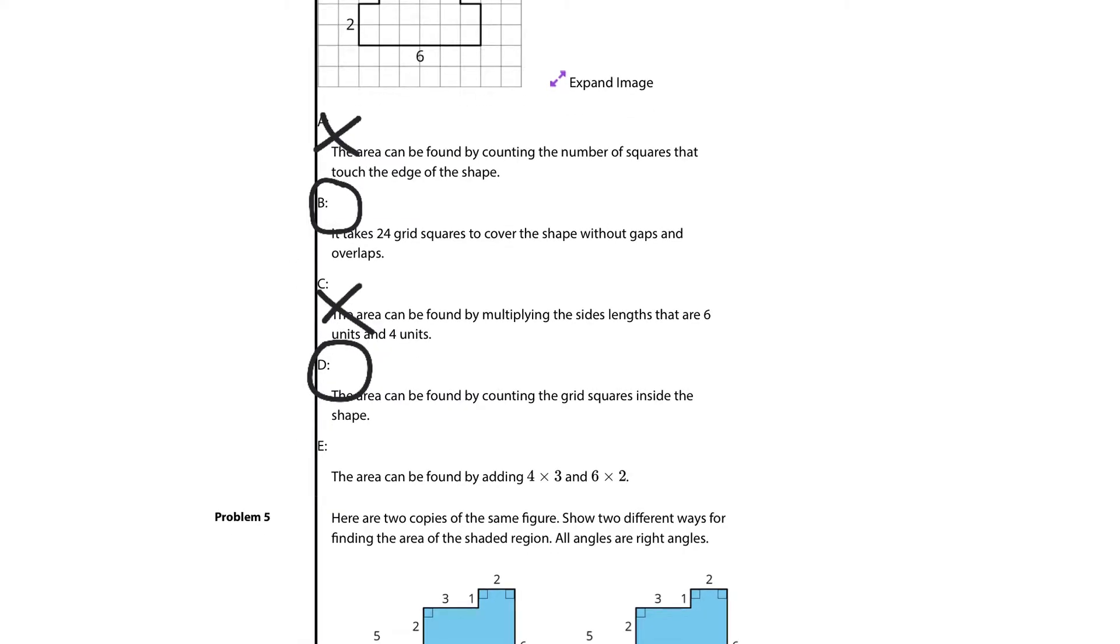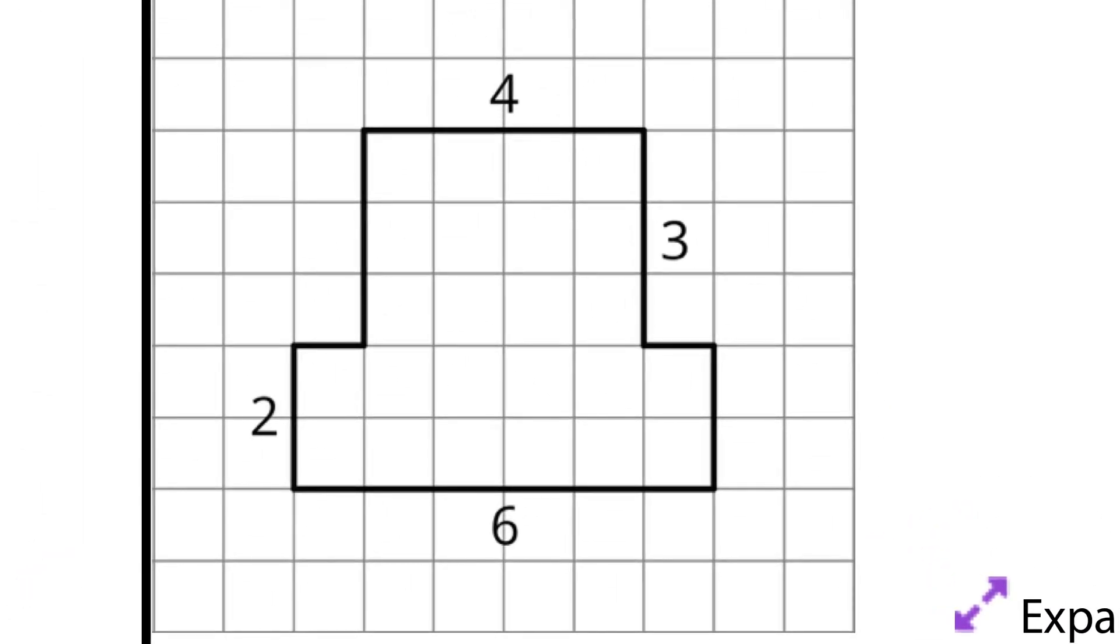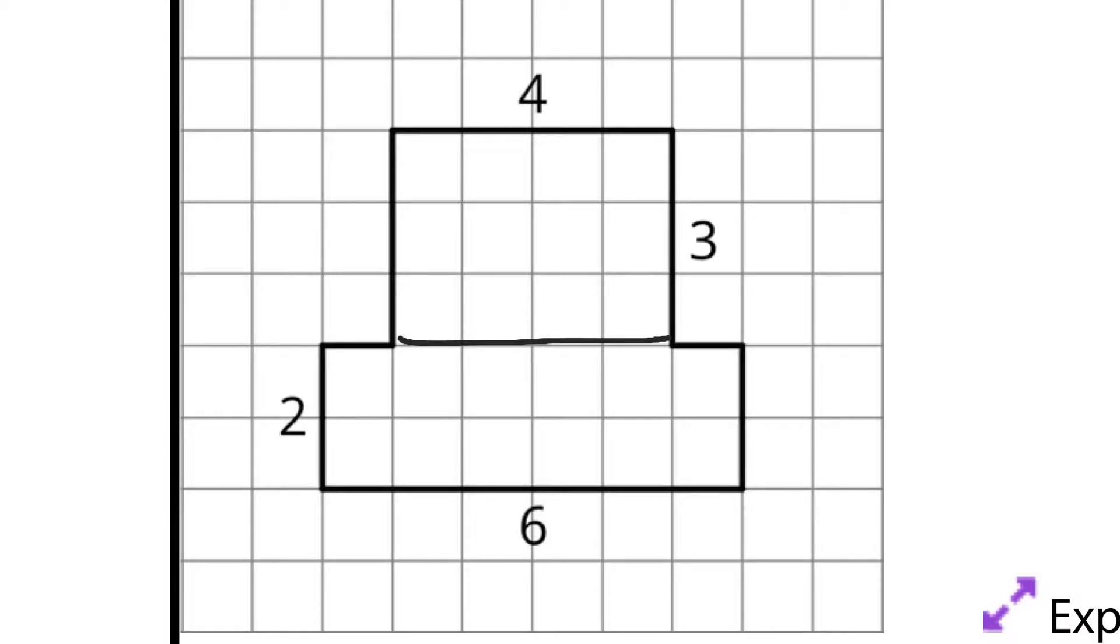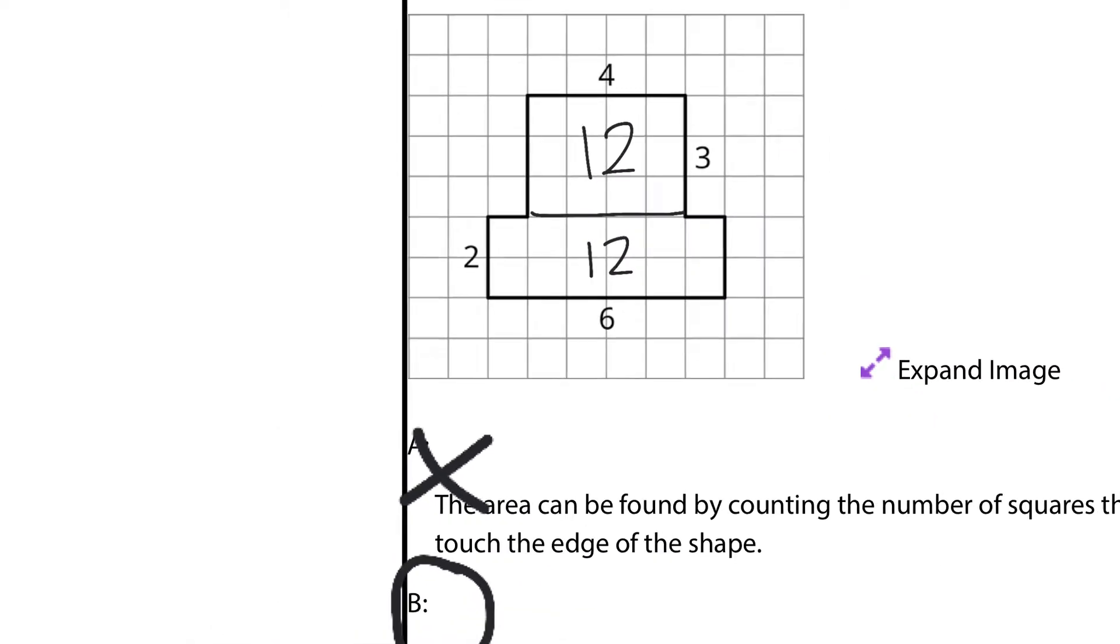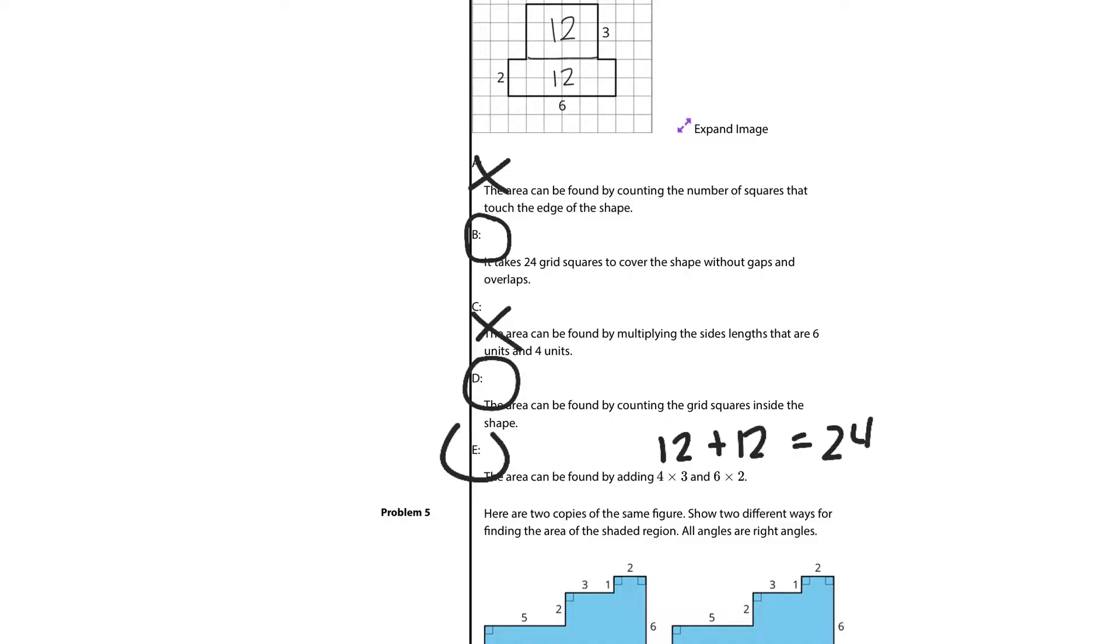The area can be found by counting the grid squares inside the shape. Certainly. If you counted all those squares up, you would certainly get 24. So, D is true. E. The area can be found by adding 4 times 3 and 6 times 2. Well, let's just test that before we do it. That's 12, and that's 12. And sure enough, when you add 12 and 12, that's 24. But let's see if the logic actually makes sense. Why are we multiplying 4 times 3? Well, if I lock in on this square and draw this line across, 4 times 3 gets me the area of 12 here. 2 times 6 gets me the area of 12 here. So, sure enough, not only does 12 plus 12 equals 24, it actually makes sense for our problem. So, E is true. So, our solutions here are B, D, and E.